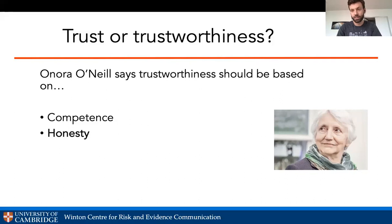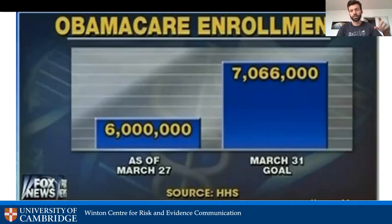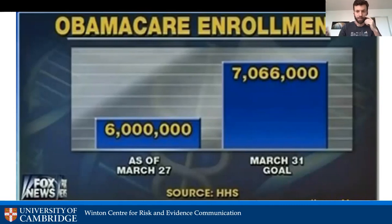Another thing O'Neill highlights is that communication shouldn't be dishonest. The Zika graph mistake was probably accidental, but consider this: Obamacare enrollment is shown at two time periods, but the y-axis is scaled from 5.5 million to 7 million instead of from zero, which dramatically accentuates a difference between two numbers that are not terribly different. This is not incompetence — this is deliberate obfuscation.